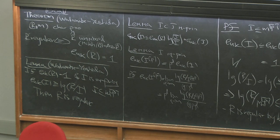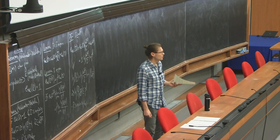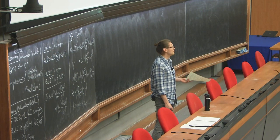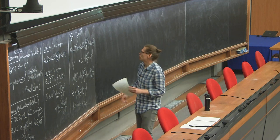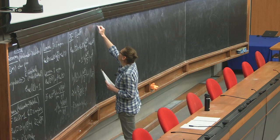We now start building the equimultiplicity machinery. Last time we built the understanding of when F-signatures are equal — that was equimultiplicity. Today we need to understand what happens when Hilbert-Kunz multiplicity doesn't change when you localize. To do that, I need a bit more about tight closure.